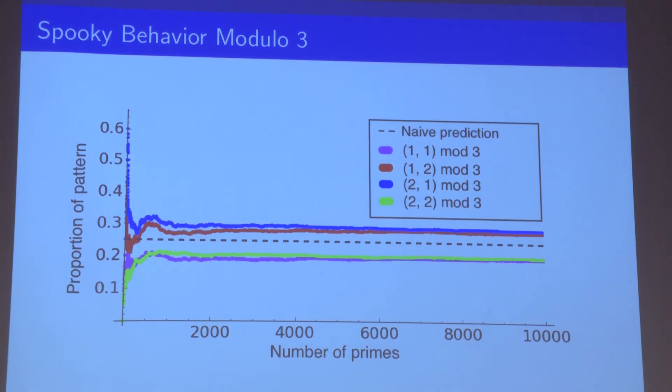Each individual prime can have two possible remainders, one and two. So there are two times two equals four possible remainders for the pair of primes. And so naively, we would expect that the frequency should be roughly 1 fourth or 0.25, and that's exactly what's shown by the black dashed line.